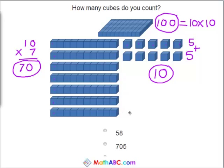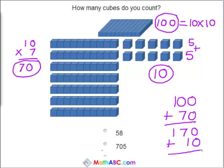Which of these answers would be correct? What would this add up to? We need to figure out our own because we know it's not 58 or 705. Let's add these up now. 100 plus 70 is 170 plus 10 more is 180. So we make up our own little answer here. The answer is 180.